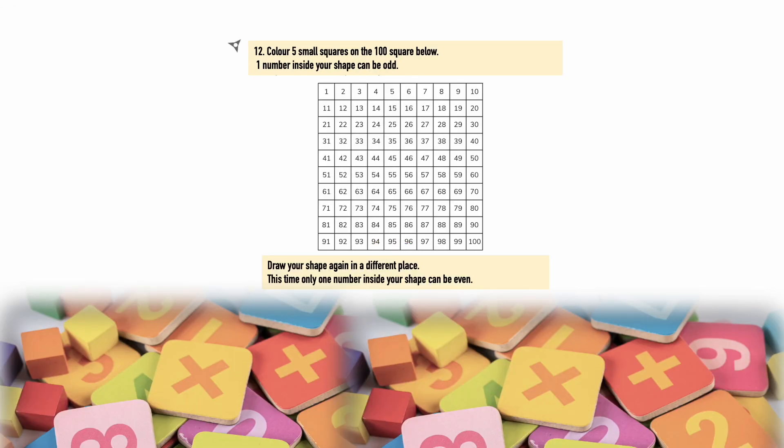Colour 5 small squares on the 100th square below. One number inside your shape can be odd. Draw your shape again in a different place. This time only one number inside your shape can be even.